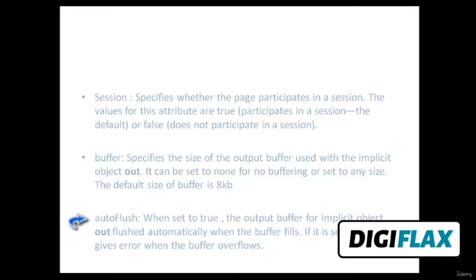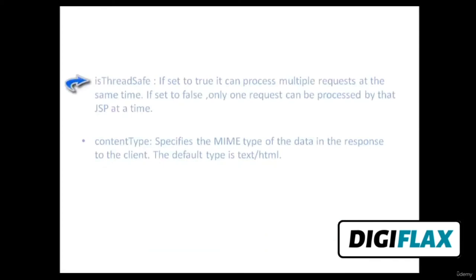The autoFlush attribute, when set to true, automatically flushes the output buffer for the implicit out object when the buffer fills; when set to false, it gives an error when the buffer overflows. The threadShape attribute, when set to true, allows the JSP page to process multiple requests at the same time; when set to false, only one request can be processed at a time. The contentType attribute specifies the MIME type of the data in the response to the client; the default type is text/html.